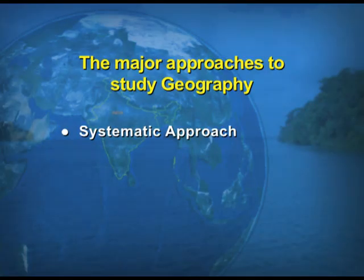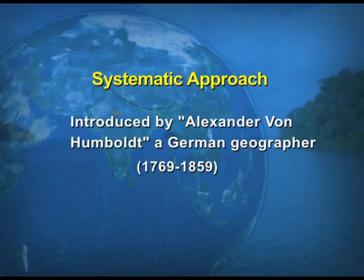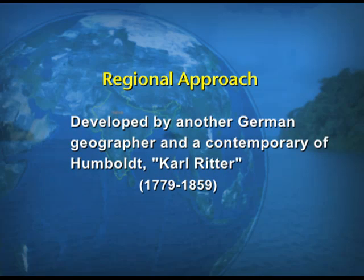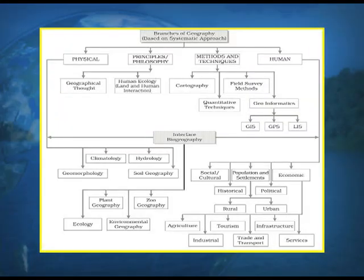There are two main approaches to study geography. One is the systematic approach and the other is the regional approach. The systematic approach was developed by Alexander von Humboldt, a German geographer, and the regional approach was also developed by a German geographer, Karl Ritter. These two approaches are the ways to study different aspects and branches of geography.